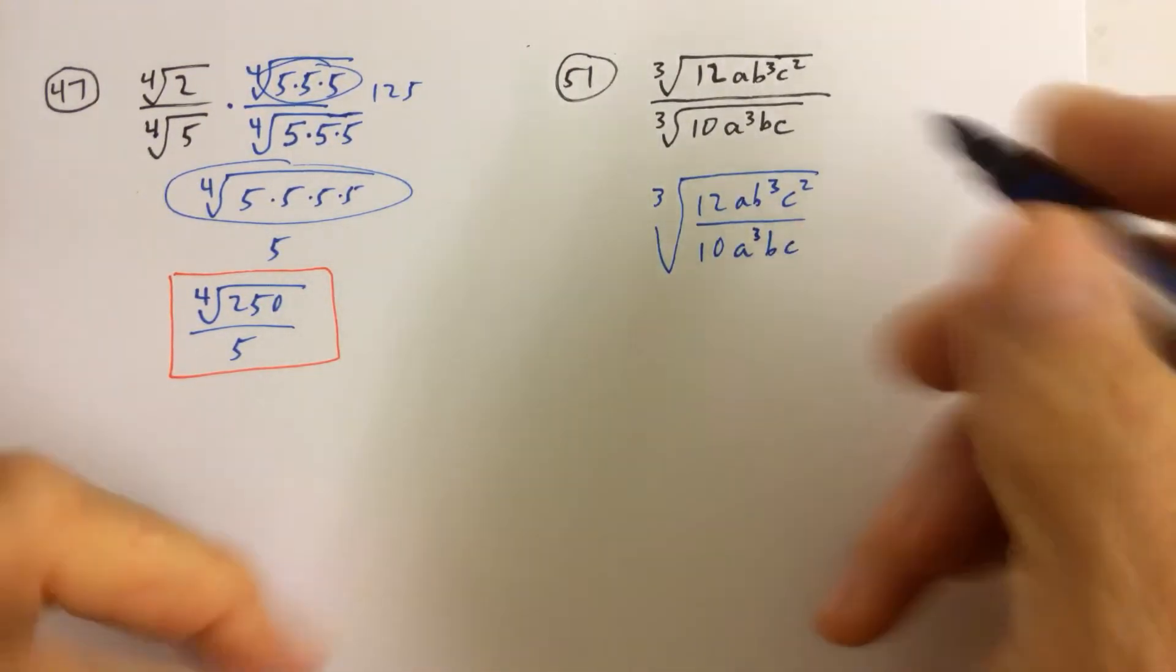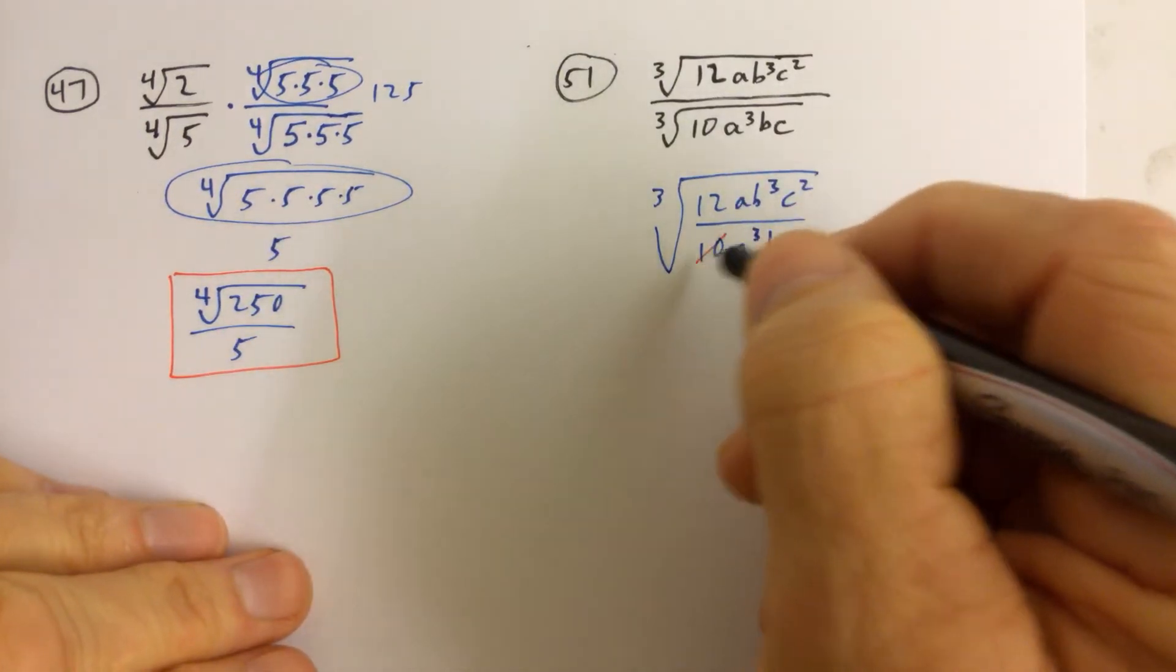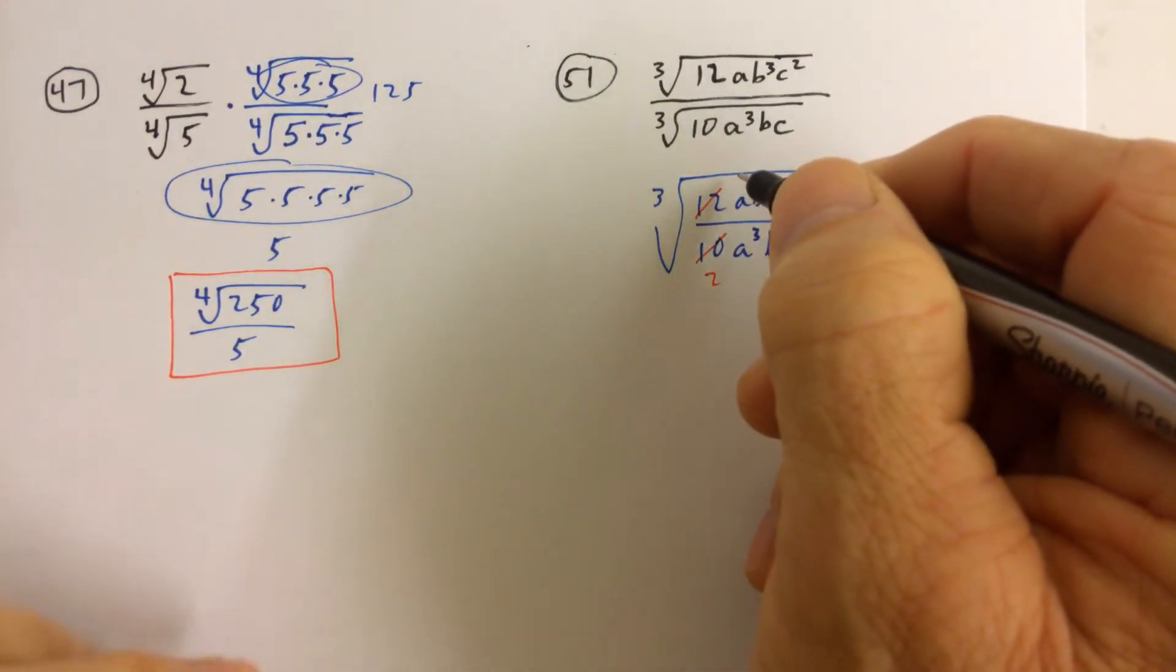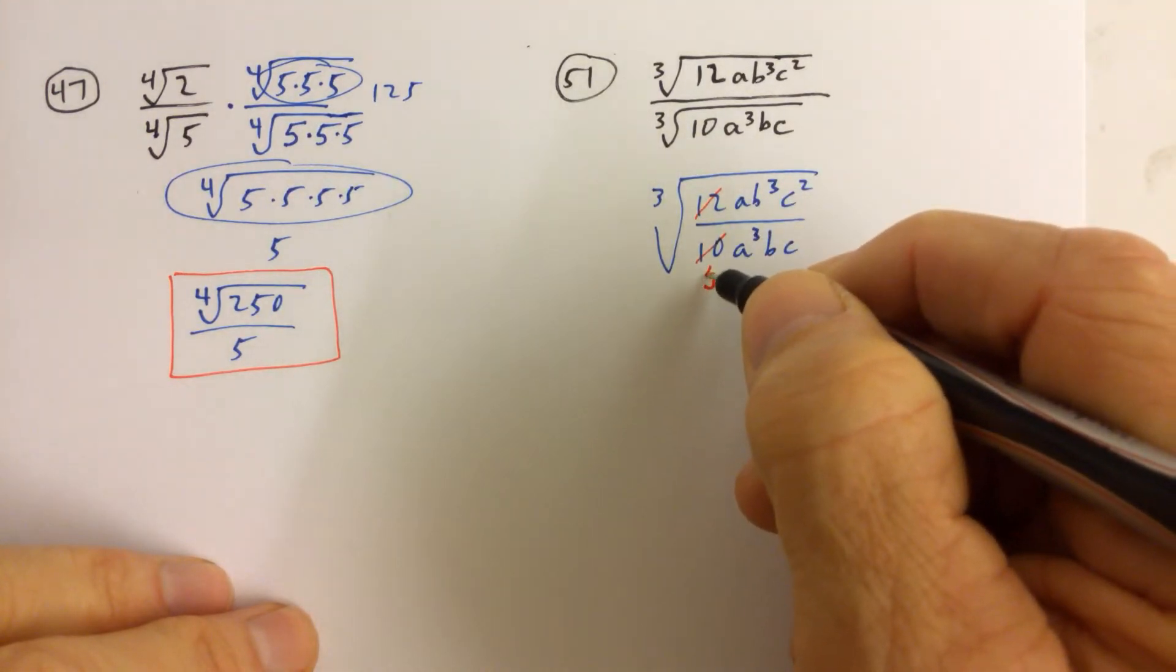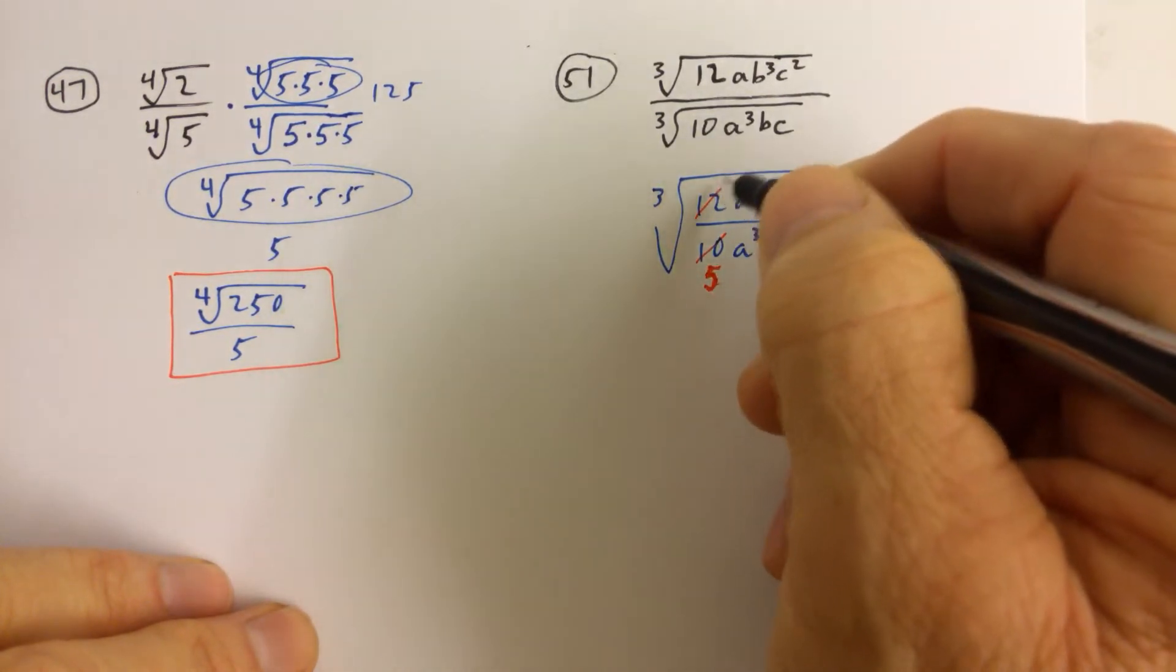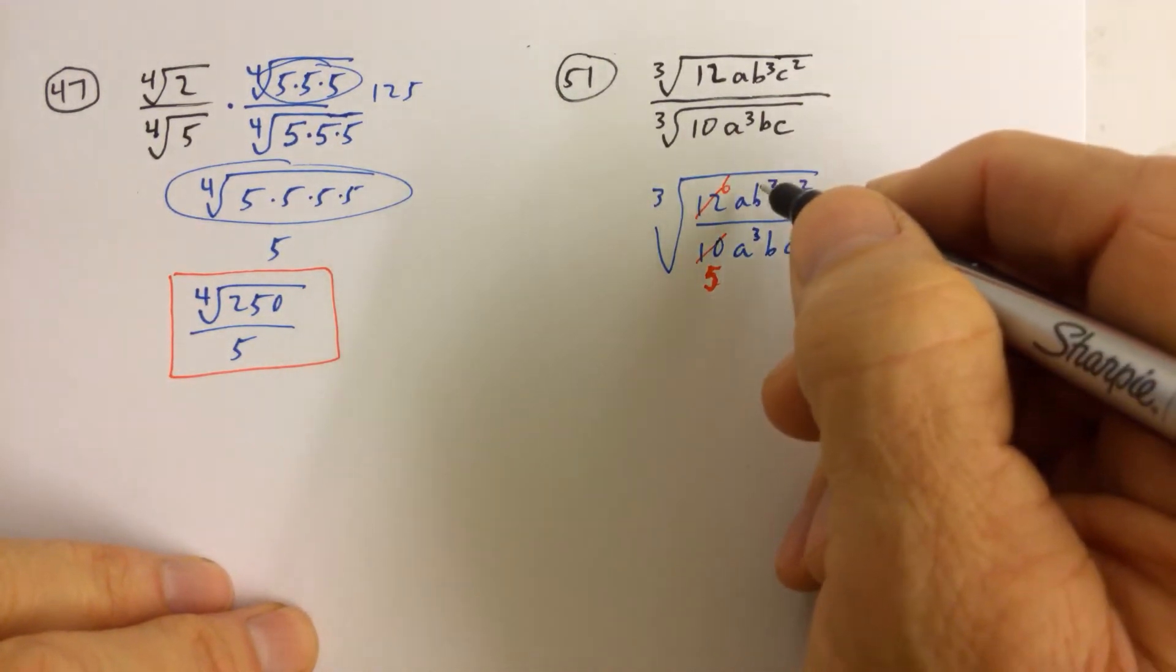and when we cancel, we see, okay, 5 divides evenly into 10 two times, and 5 divides evenly into 10 five times, and 2 divides evenly into 12 six times. And then,